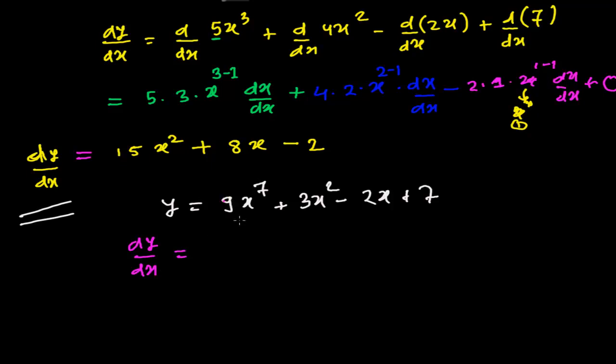Now simply I will multiply 9 times 7, 63, I will write x and I will just write 1 less. So it will be 7 minus 1, that will be 6. And again here 3 times 2, that is 6, and 1 less I will raise the power, that is 2 minus 1, that is 1. And again 2, there is nothing, there is 1. 2 times 1, that is 2, and I will raise the power x.